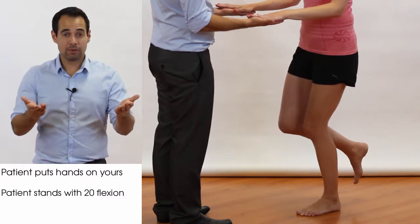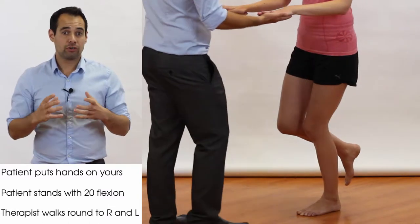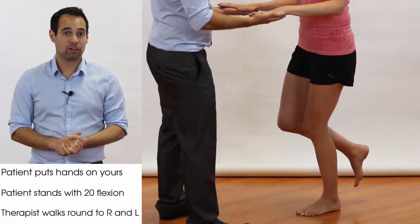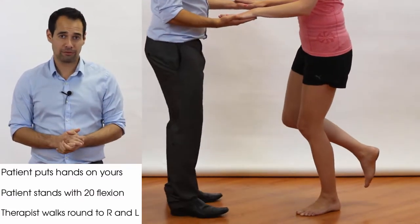From there, as the therapist, we're going to walk ourselves round to one side and the other, which is going to create some rotation at the tibia, both internal and external rotation. There may also be some rotation at the hip, but it's principally the tibial rotation that we're looking for.